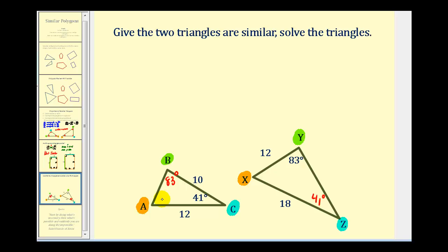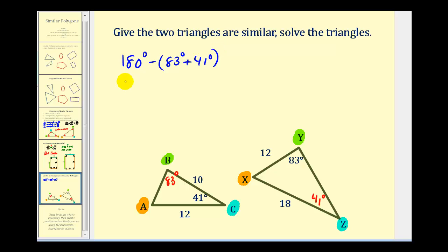We're left with one remaining angle in each triangle. Remember, the sum of the three angles must be 180 degrees. To determine the measure of angle A and angle X, we take 180 degrees and subtract the sum of 83 degrees and 41 degrees. That gives us a measure of 56 degrees for both angle A and angle X.